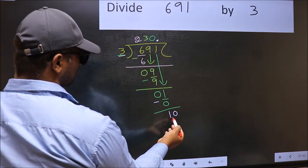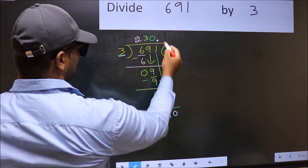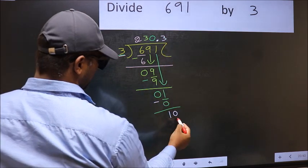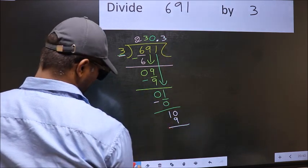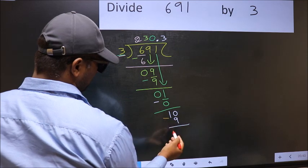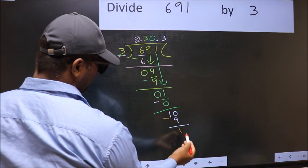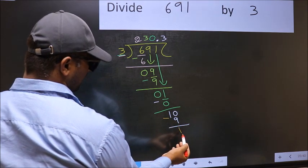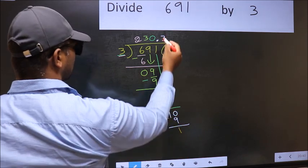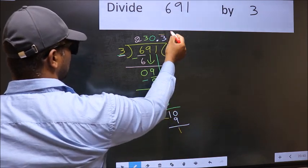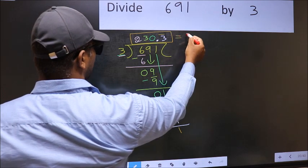So 10. A number close to 10 in 3 table is 3 times 3 is 9. Now you should subtract. 10 minus 9, 1. We got 1 again. That means we get bar on this number. So this is our quotient.